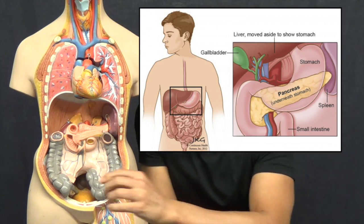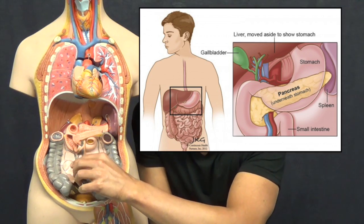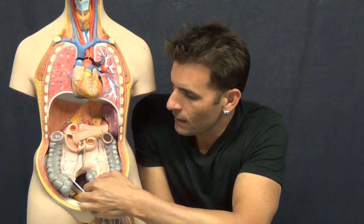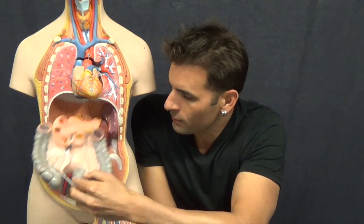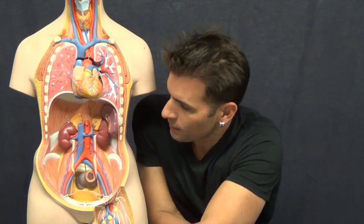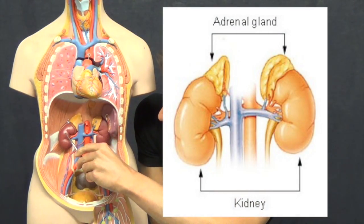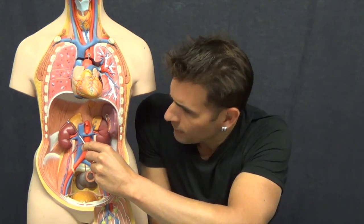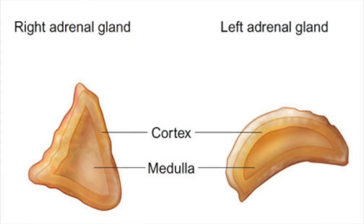In this video we're going to be discussing the pancreas, which is located right here, as well as the adrenal glands, which are located on top of the kidneys, and the kidneys themselves. The adrenal glands are anatomically divided into the adrenal cortex and the adrenal medulla.